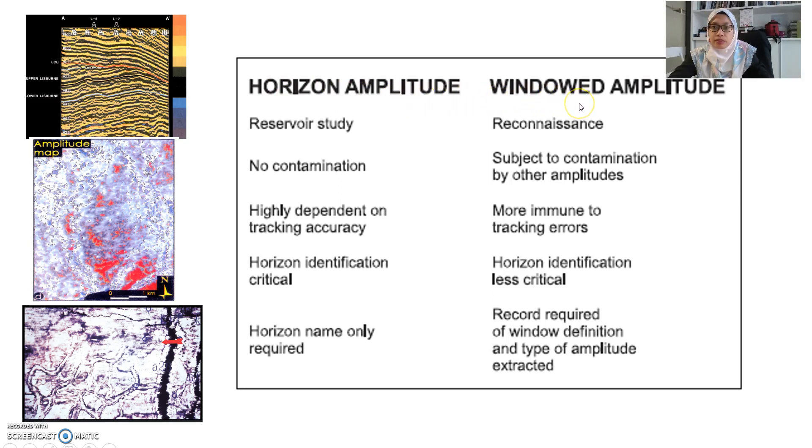We have learned about horizon amplitude extraction and amplitude extraction based on windows technique, which is either by two horizons or based on time. We use horizon amplitude for reservoir study. It's usually no contamination because you pick your horizons. It is highly dependent on how your picking is correct, your tracking accuracy. Important to pick the horizon first and you need to have the horizon name first.